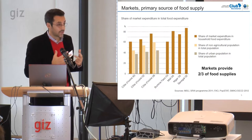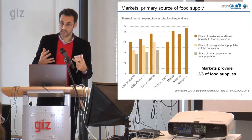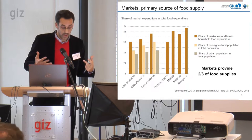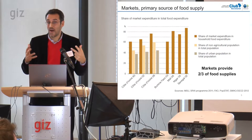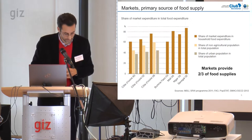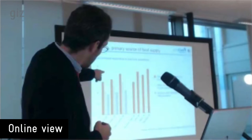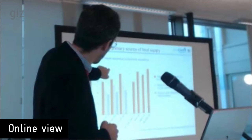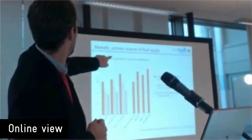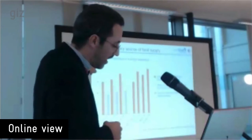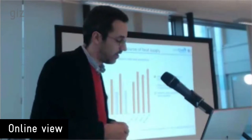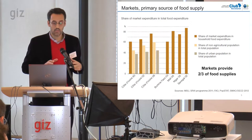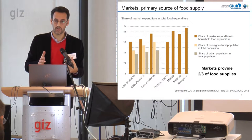Urbanization is a determinant factor of that transformation. In urban areas, most households buy their food on the market, with an average of about 93% across the region. Looking at Côte d'Ivoire, for example, the observed rise in the proportion of food bought on the market matches quite well with the increase in the pace of urbanization. So today, for the region, we can state that markets provide at least two-thirds of the food supply.